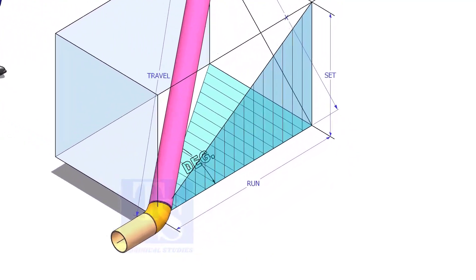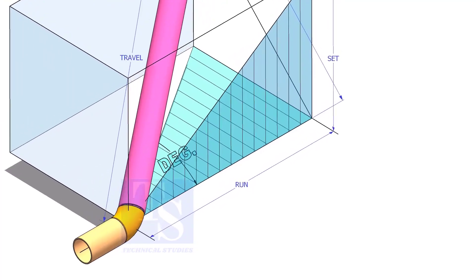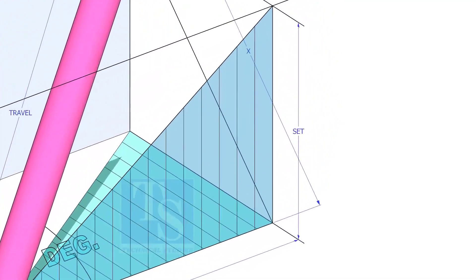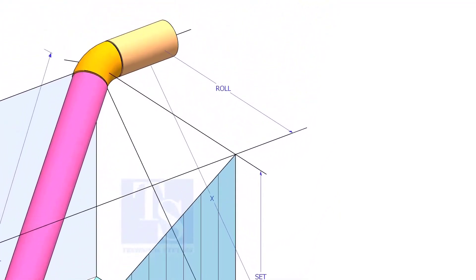In this video, I will show you how to calculate the travel length and the including angle of a double rolled offset pipe.